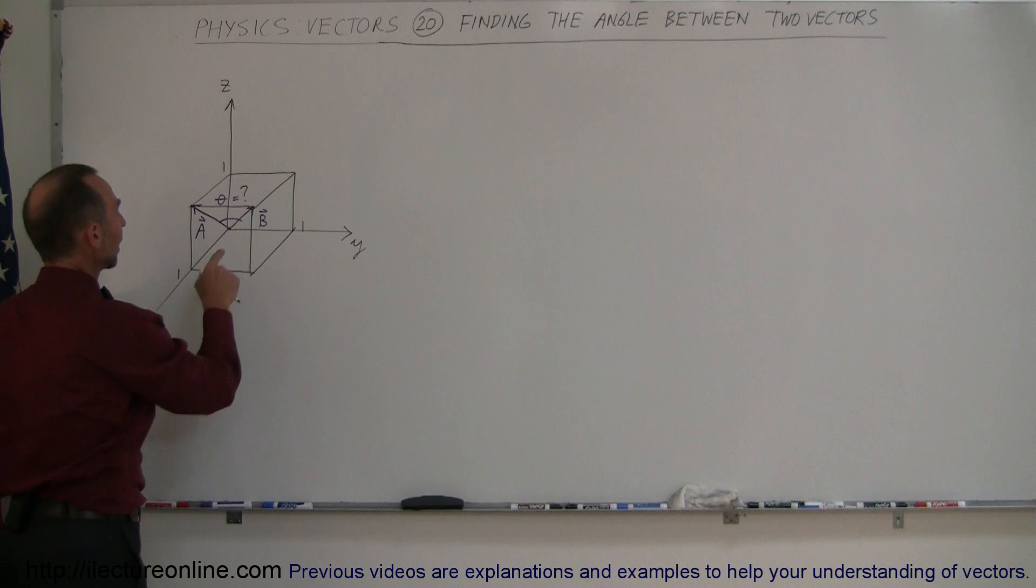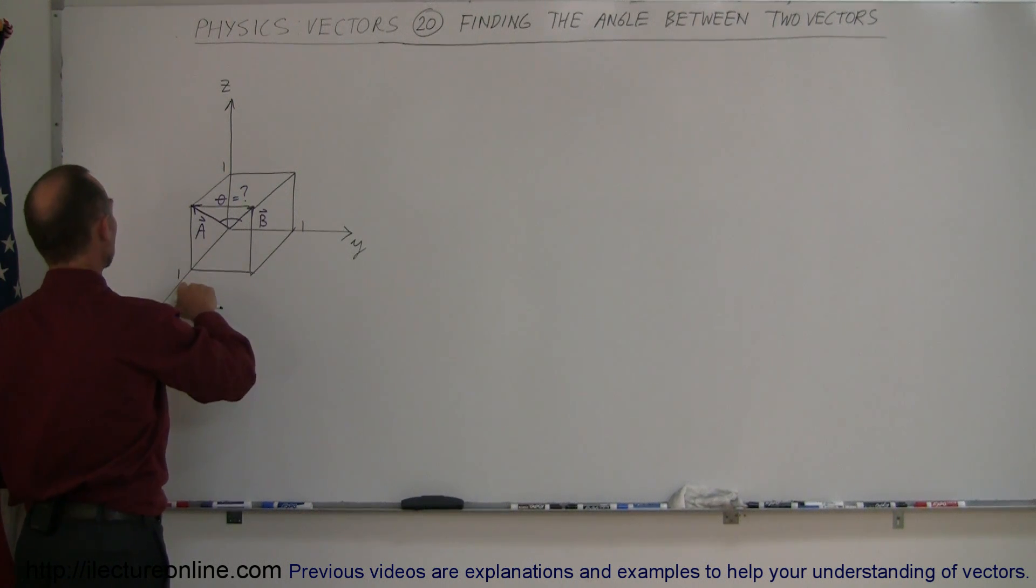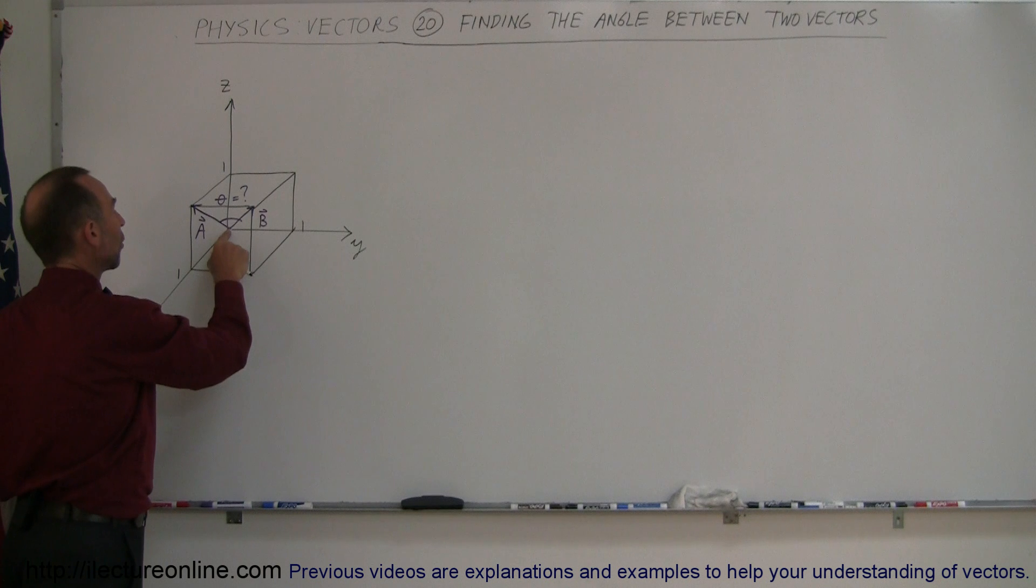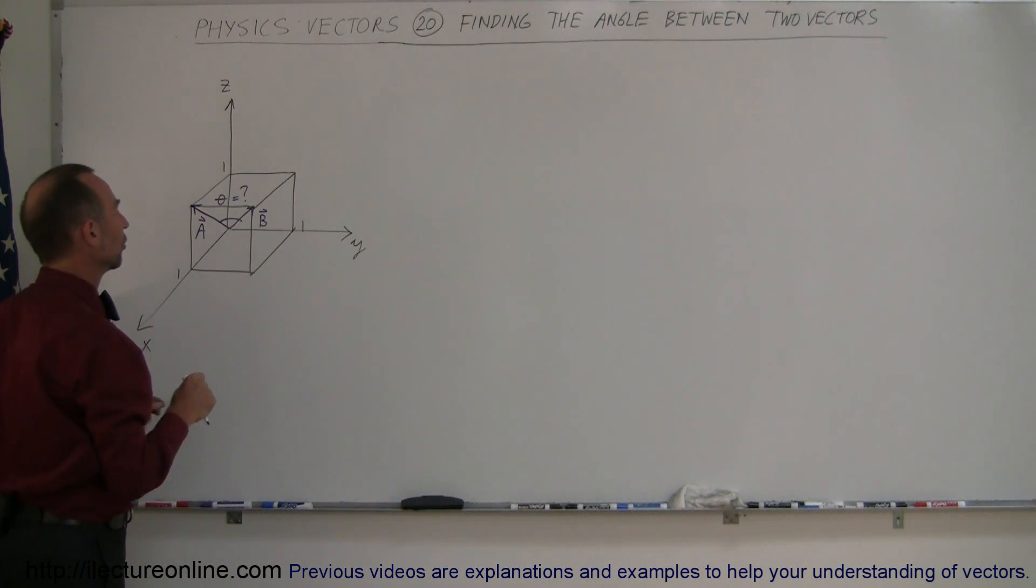I have a vector that goes from the origin to the point at the corner of the cube that lies on the x-z plane. And then I have a vector that goes from the origin to the point farthest away from the origin.